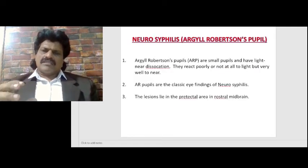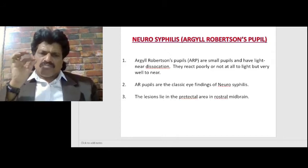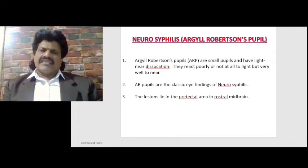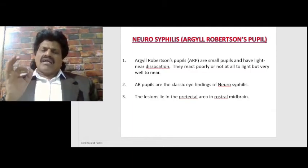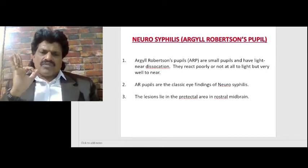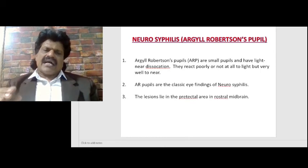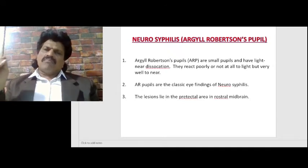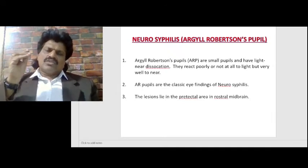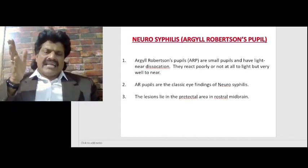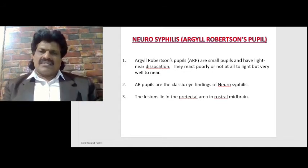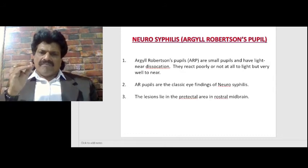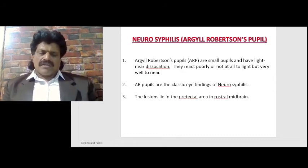Argyll Robertson's pupils are small pupils with light-near dissociation — they react poorly or not at all to light but very well to near. They are the classic eye finding of neurosyphilis. The lesion lies in the pre-tectal area in the rostral midbrain, so the light reflex is affected but the accommodation reflex pathway, which does not go to the pre-tectal area, is spared — hence light-near dissociation.